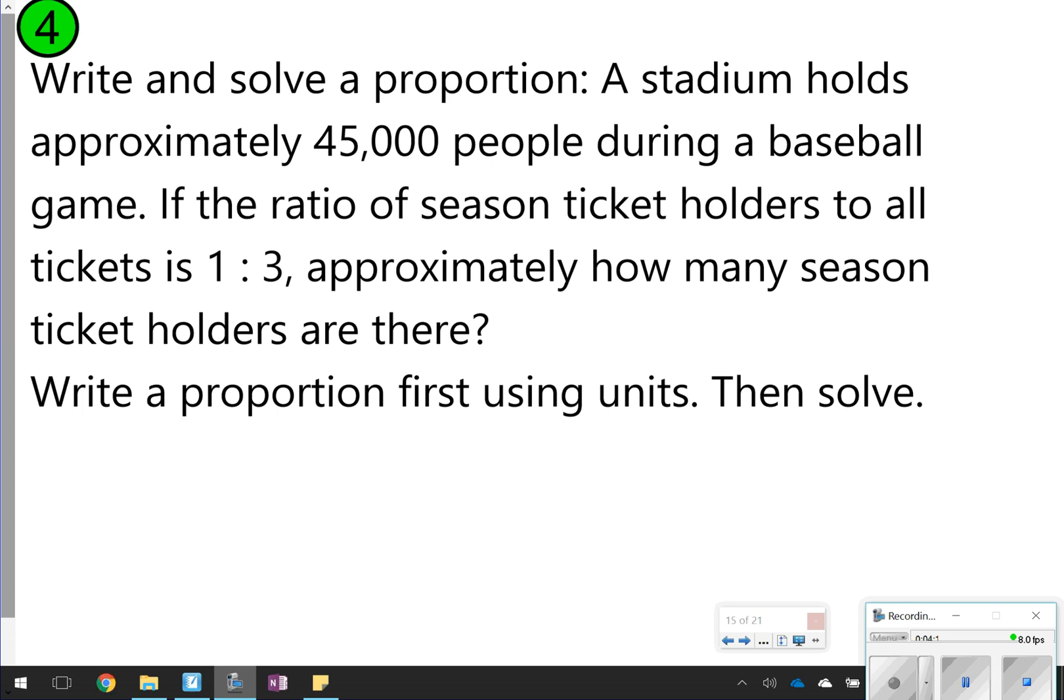Write and solve this proportion. So you're going to, again, pause the video and try it by yourself to see what you get. So this one says the stadium holds approximately 45,000 people as total during a baseball game. If the ratio of season ticket holders to all tickets is 1 to 3, how many season ticket holders are there? So it's write a proportion and then solve. So I know my ratio is 1 to 3.